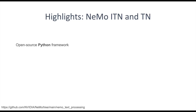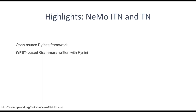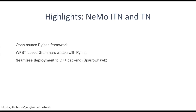We introduced an open-source Python framework for inverse and text normalization inside the NVIDIA NEMO toolkit. It uses grammars written in PyNini, a Python tool that uses OpenFST underneath and compiles these grammars into WFSTs. These compiled grammars can be exported and dropped into Sparrowhawk, so the NEMO framework offers seamless deployment to C++ — a pipeline which can be reproduced by others for their own product.